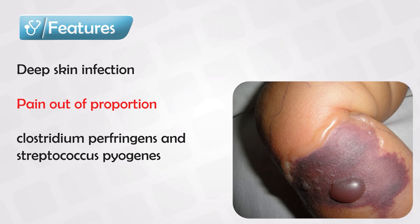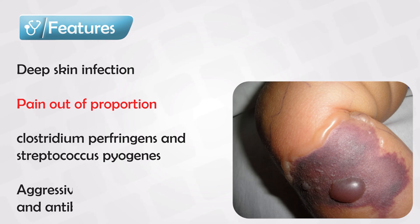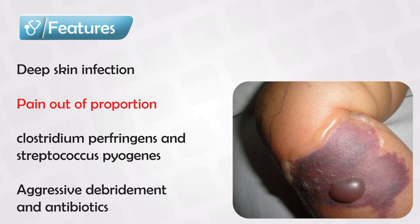These patients can also have gas underneath the skin, so a purple bulla can be formed very quickly. Whenever you see necrotizing fasciitis, aggressive debridement is necessary. The complications are serious — it can quickly develop into bacteremia and sepsis.